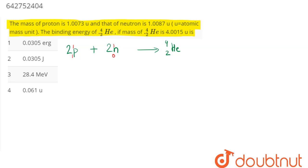So in this process we can say that mass of proton is 1.0073 and mass